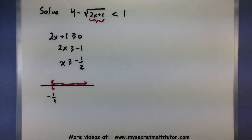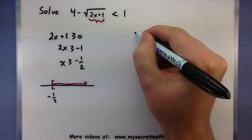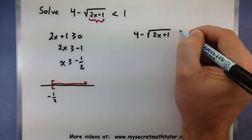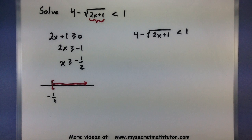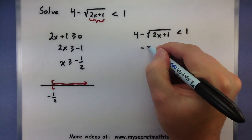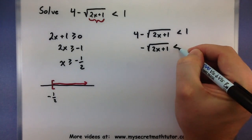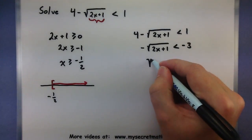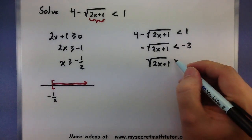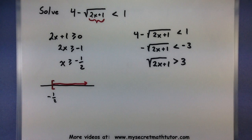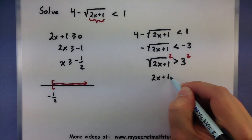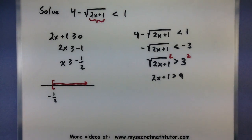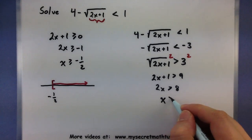Now that we know what values we can use without giving us a negative underneath the root, let's solve this directly. So 4 minus the square root of 2x plus 1 is less than 1. We can start off by trying to isolate that root — let's subtract 4 from both sides. I have a negative sign that I still want to move to the other side, so let's multiply both sides by negative 1. Remember that since we are working with inequalities, when you multiply by a negative, we need to flip that sign. Let's go ahead and square both sides. So 2x plus 1 is greater than 9. Now let's subtract 1, and finally let's divide by 2. So x is greater than 4.